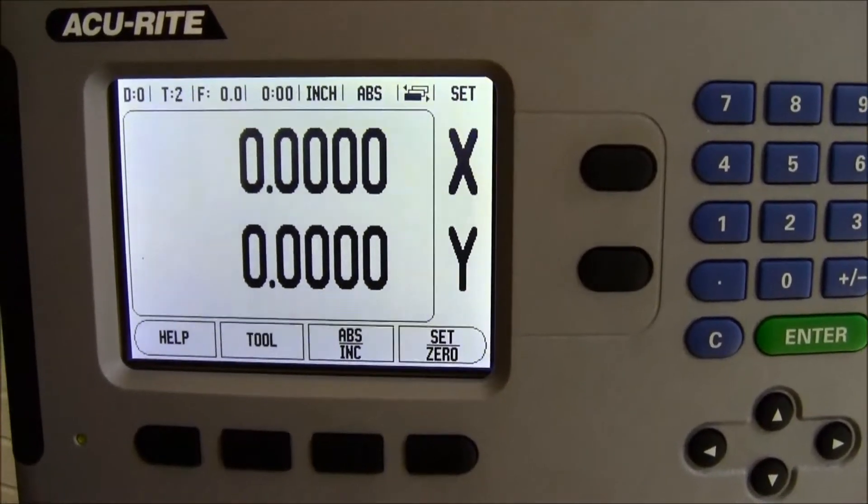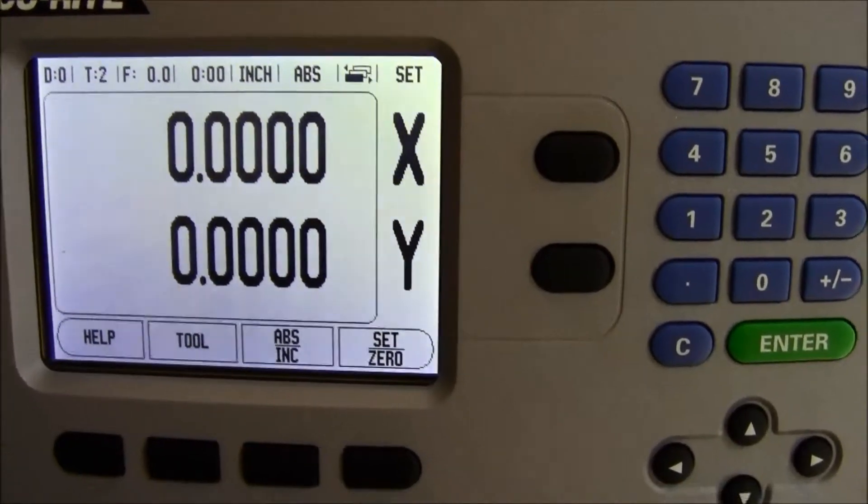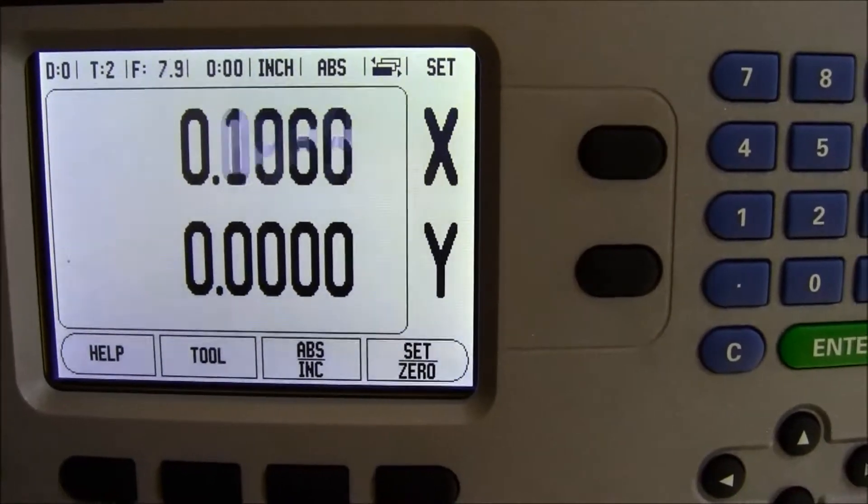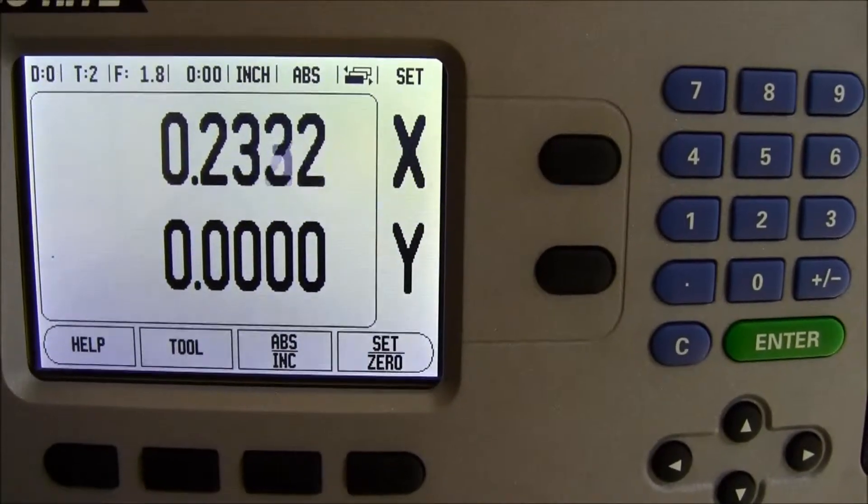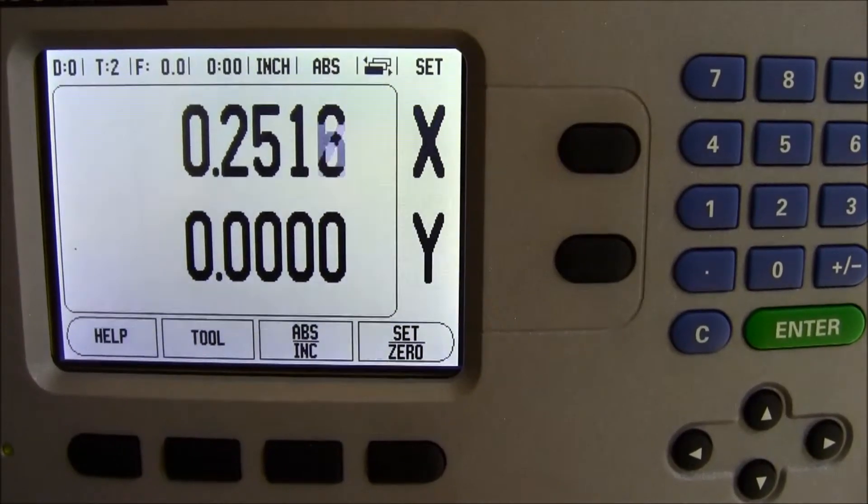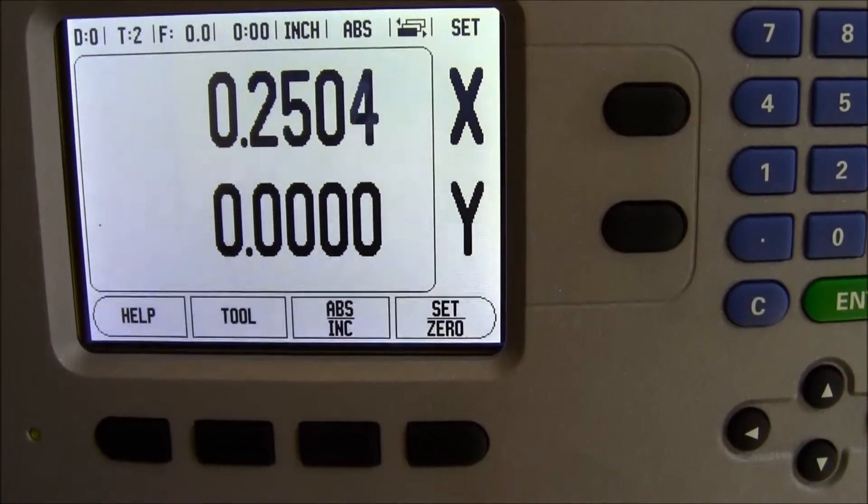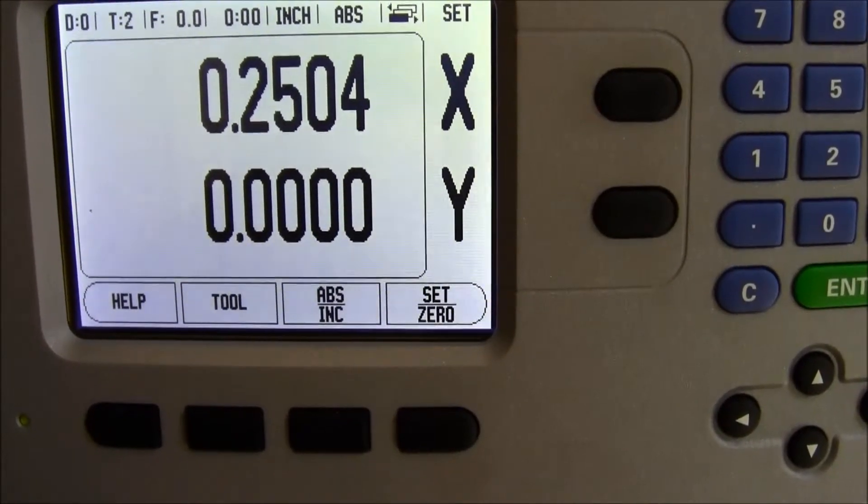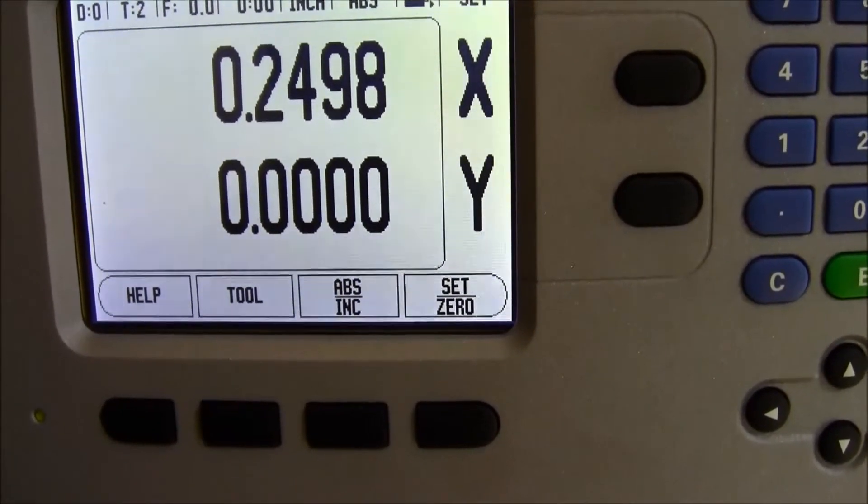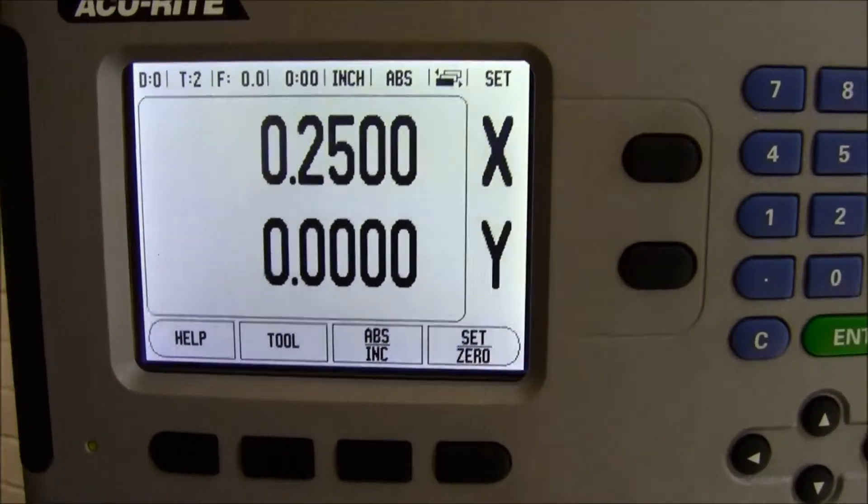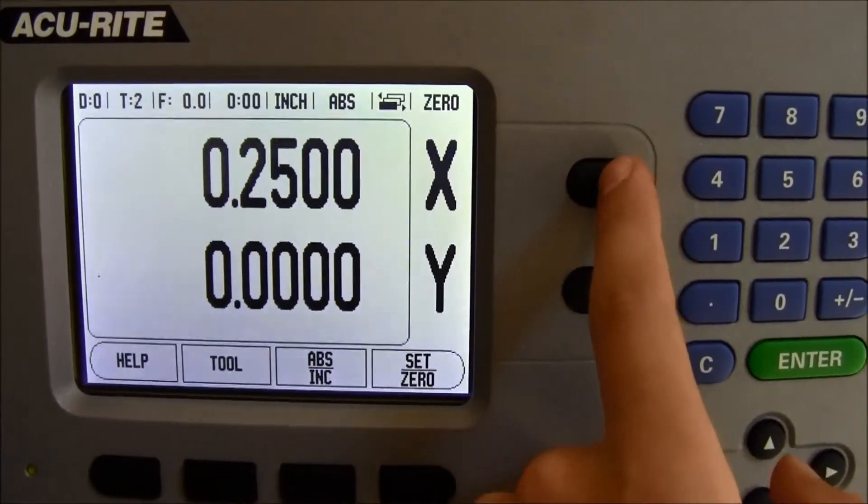Note that you have only found the edge of the edge finder. To find the center of the spindle, you must move the axis half the width of the edge finder. Since the edge finder is half an inch, you must move the x-axis to 0.25 to truly find the center of the spindle. Now that you have found the center of the spindle, you can set the x-axis to 0 again.